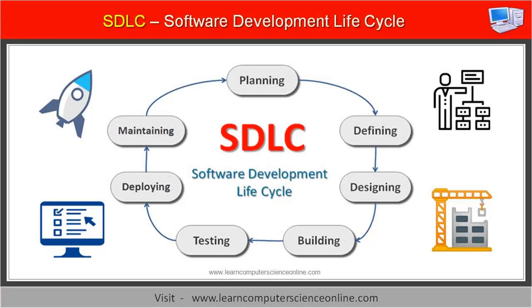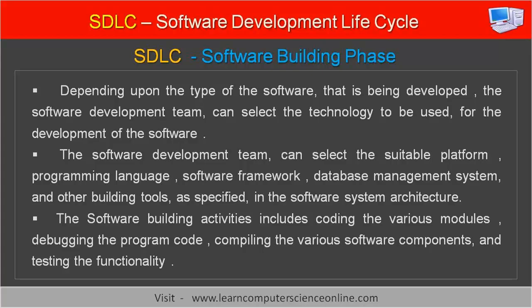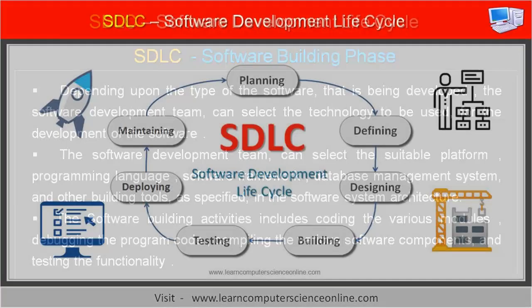The fourth phase in the software development process is actually building the software with suitable technology and tools. After finalizing the SRS, software design features, and software system architecture, the next step is to start building the software by coding. Depending on the type of software being developed, the team can select the appropriate platform, programming language, software framework, database management system, and other building tools as specified in the software system architecture. The building activities include coding the various modules, debugging the program code, compiling the various software components, and testing the functionality.